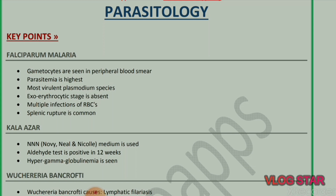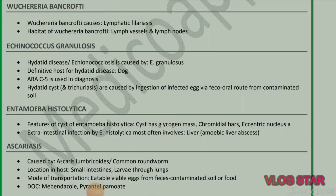In falciparum malaria, multiple infections of RBCs and splenic rupture are common. Next is kala-azar: NNN medium (Novi, Neal and Nicole medium) is used, aldehyde test is positive at 12 weeks, and hyper-gamma-globulinemia is seen.